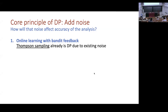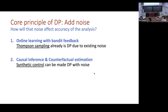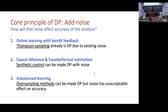We'll go through three short vignettes about how we can use these basic tools and definitions to add noise into the types of things we actually like to do. The first is online learning with bandit feedback — we'll examine Thompson sampling, an algorithm from the 1930s that is already randomized. Next, causal inference and counterfactual estimation — existing algorithms that can be made private with small loss in accuracy. Finally, imbalanced learning, where in some cases adding differential privacy can really be a problem and doesn't work as nicely as you might like.